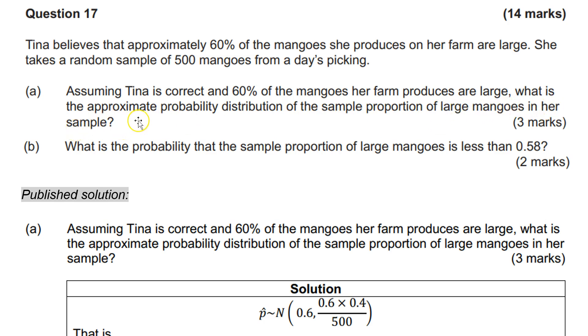Now, this is where the examiners tripped themselves up. They actually wrote a stupid question, because Tina's taken a sample. Look, it tells us up here, she takes a random sample and then the question follows on, asking us about the sample proportion in her sample. Now, once you've taken a sample, that's it. It's not a random variable. It's basically whatever it is, whatever the proportion happens to be. So what they meant to ask the students here was the sample proportion of large mangoes in random samples of size 500.